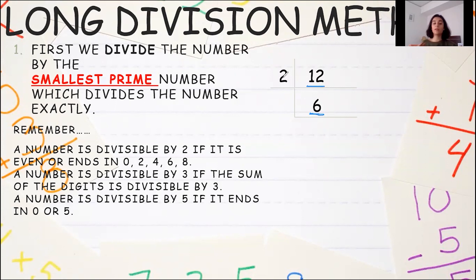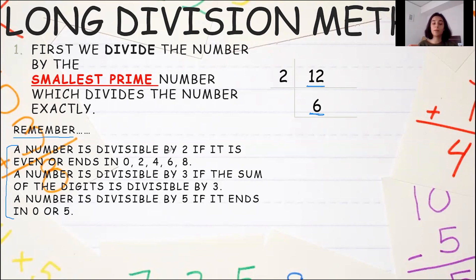If you have any doubts, please post them in the comment section and we will answer them all. Here is a divisibility rule you can remember: a number is divisible by 2 if it is even or ends in 0, 2, 4, 6, or 8. A number is divisible by 3 if the sum of its digits is divisible by 3. And a number is divisible by 5 if it ends in 0 or 5.